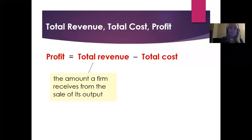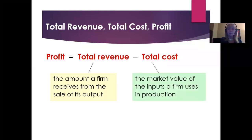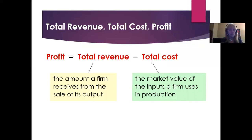Total revenue is the amount that the firm receives from the sale of its output — price times quantity. Total cost is the market value of the inputs that the firm uses to produce that output. To produce that output, it's never free. Remember those factors of production: land, labor, capital, and entrepreneurship — they always have to be paid for, and they are always necessary to get any kind of output.